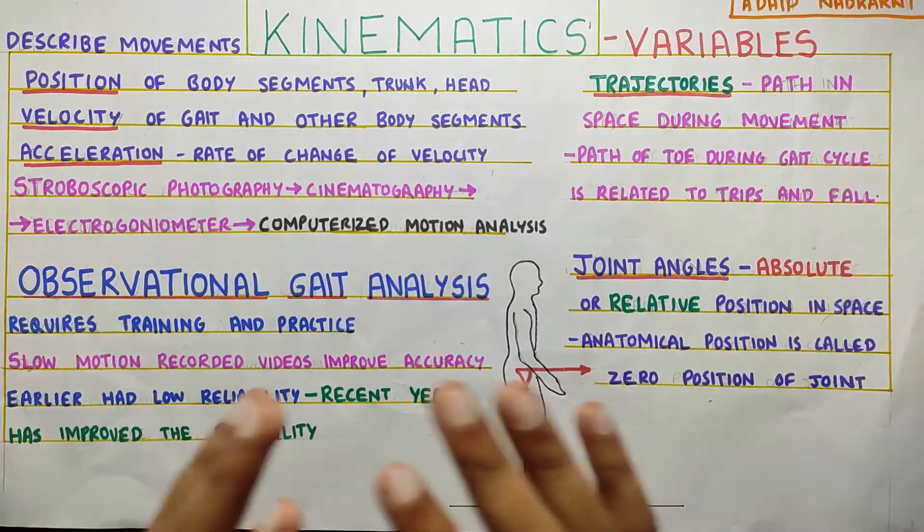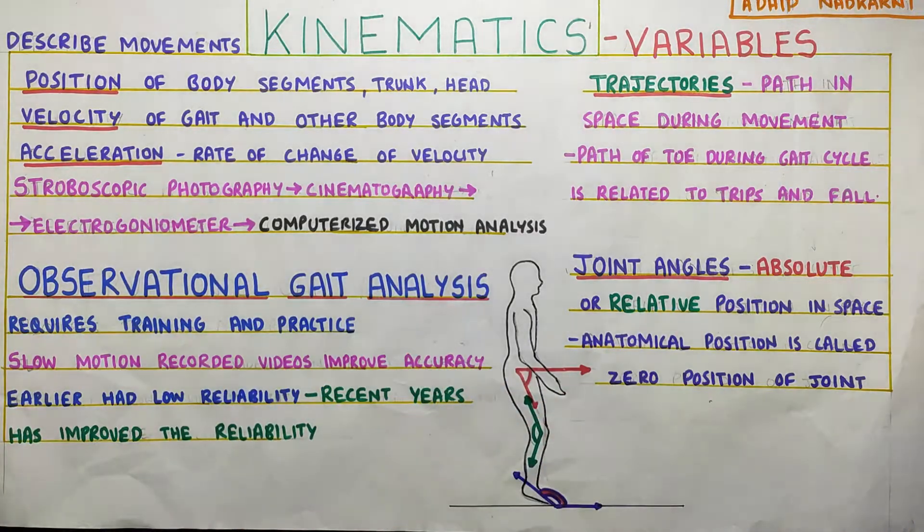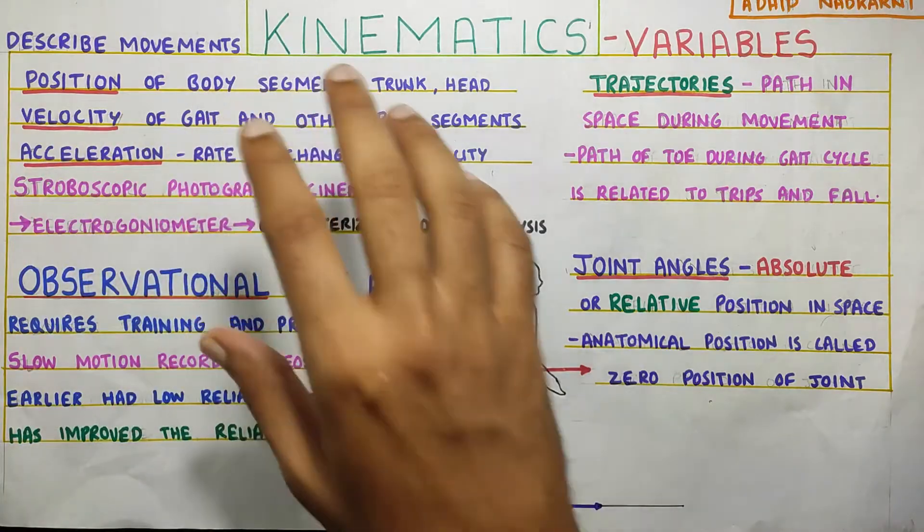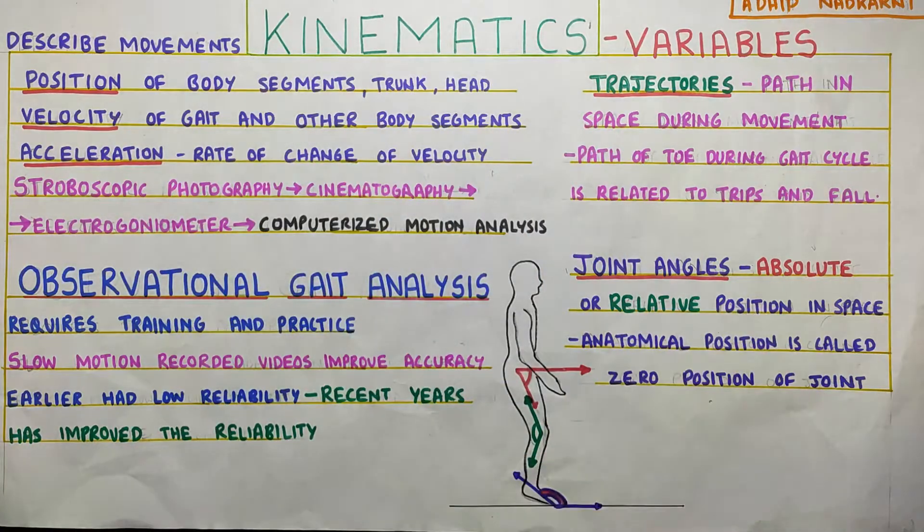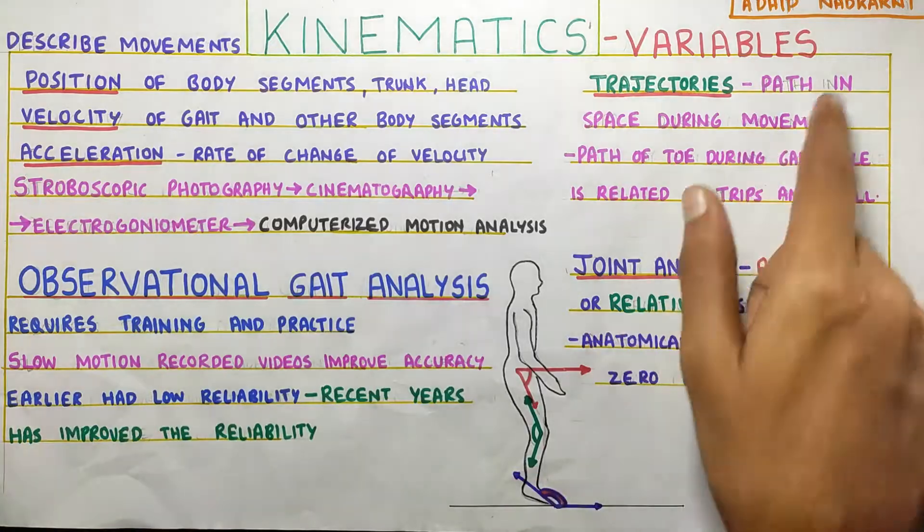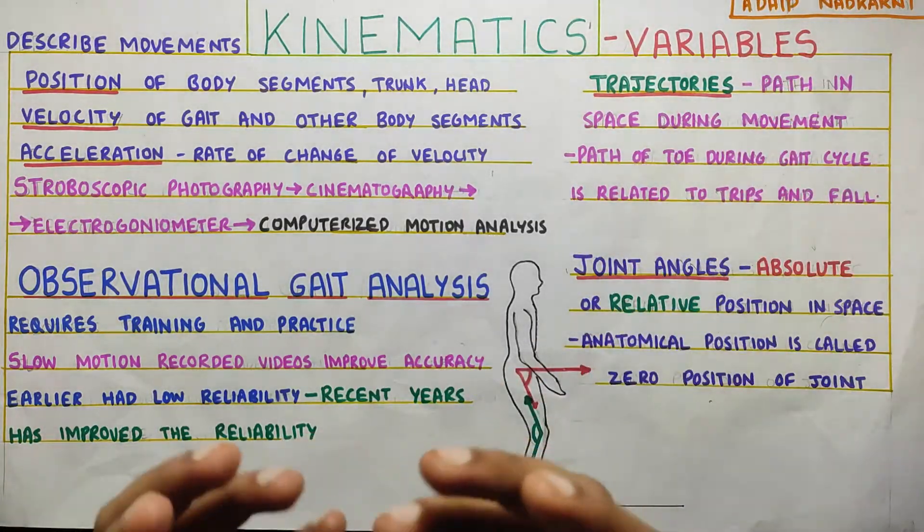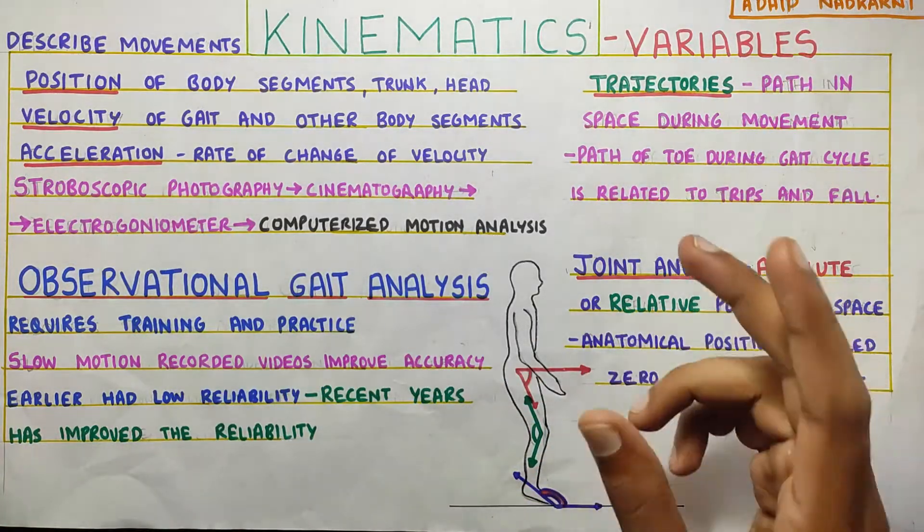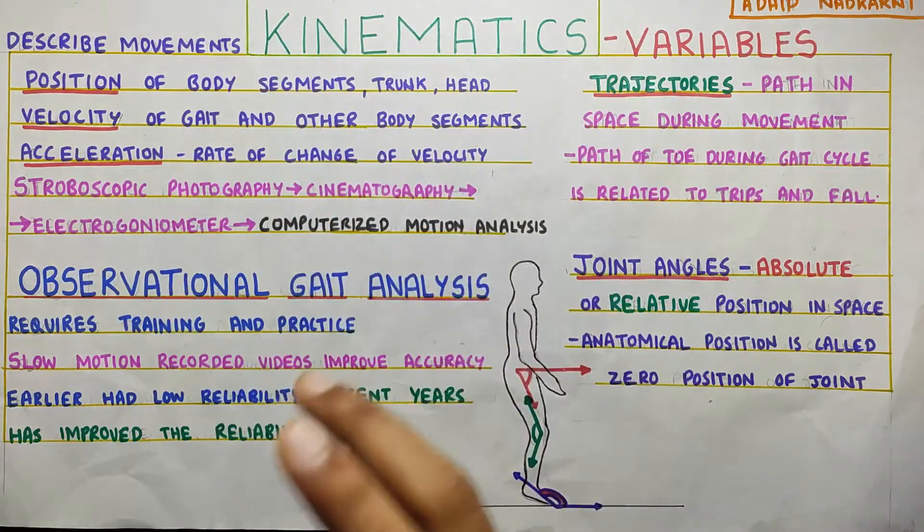So that's all we have for this video. It was just basically giving you an introduction to all these parameters that we use. So in future videos, as we mention these, there shouldn't be any doubt or hesitation. So to summarize the topic, we talked about the variables or you can also call them the parameters that we use for kinematics while analyzing the gait.